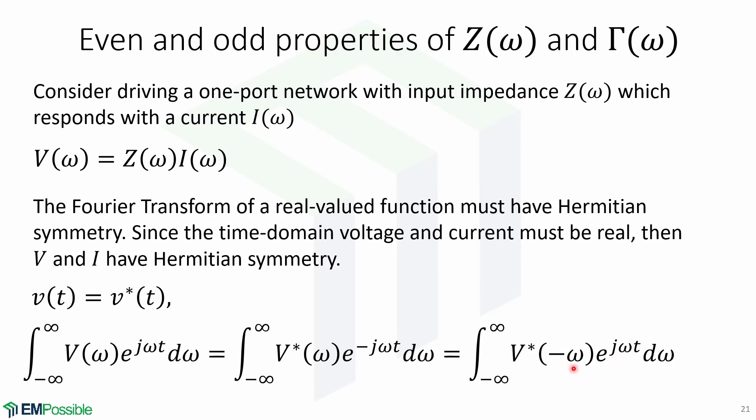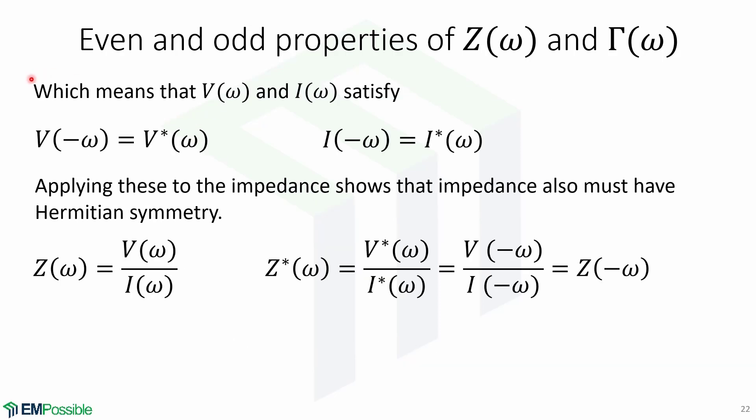This means that the voltage and current also satisfy these expressions. Notice the negative sign here in omega. Applying these to the impedance, which is the ratio of voltage to the current, shows that it must also have Hermitian symmetry.